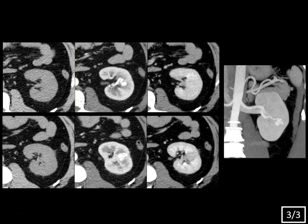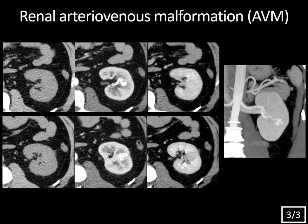On multi-phase CT of the kidney using a renal mass protocol — showing non-contrast, corticomedullary phase, and delayed nephrographic phase — we have a tortuous feeding artery leading to a vascular nidus in the interpolar kidney on the corticomedullary phase. On the 3D MIP reformatted image, you can see the tortuous feeding artery to this lobulated vascular nidus with a draining vein. This is a typical renal AVM — an arteriovenous malformation — an abnormal congenital communication between arteries and veins with a vascular nidus.